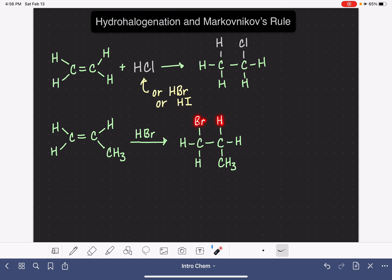In a situation like this, we have something called Markovnikov's rule to help us make a prediction about where the hydrogen should go and where the bromine should go in this type of reaction.